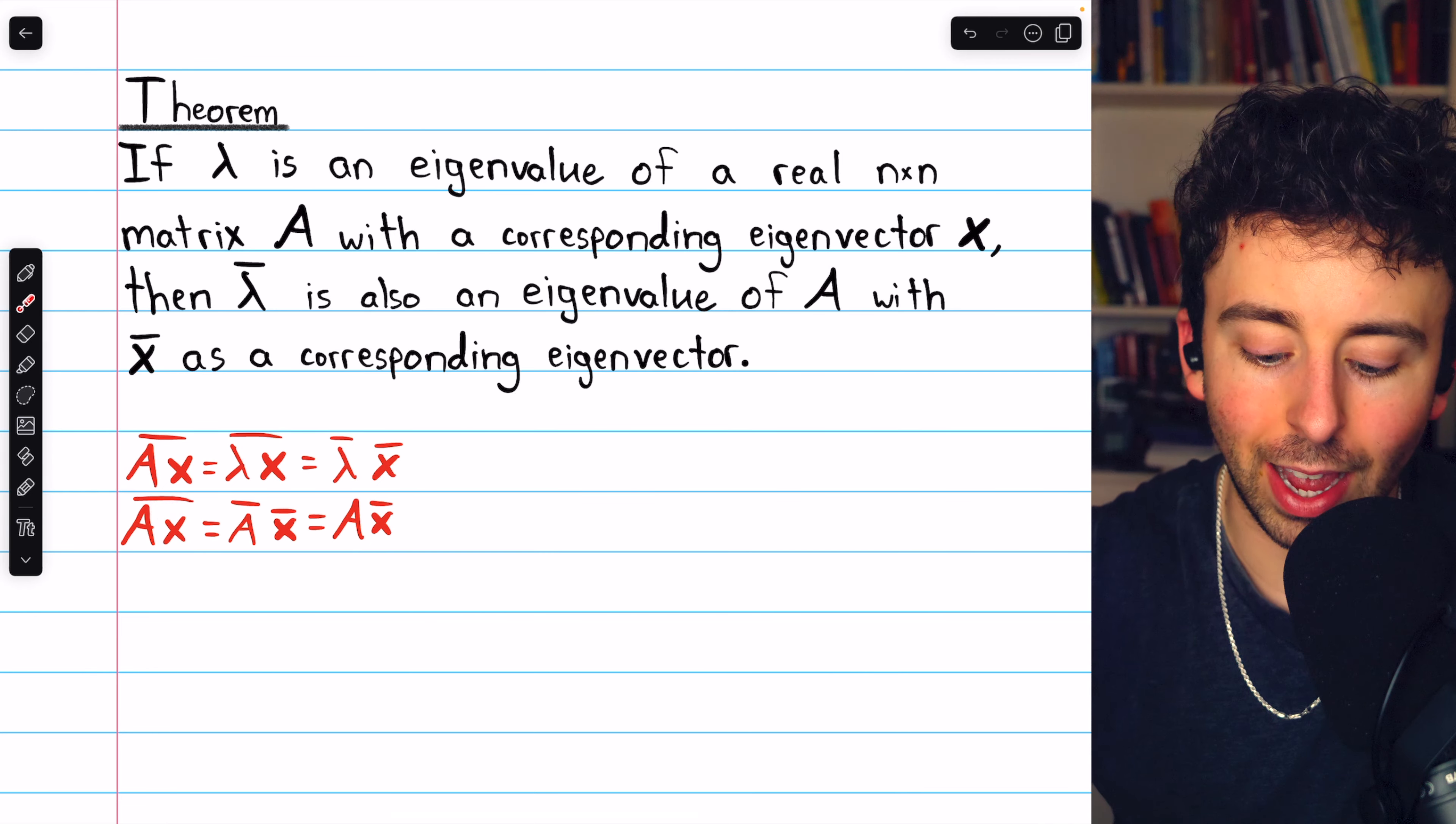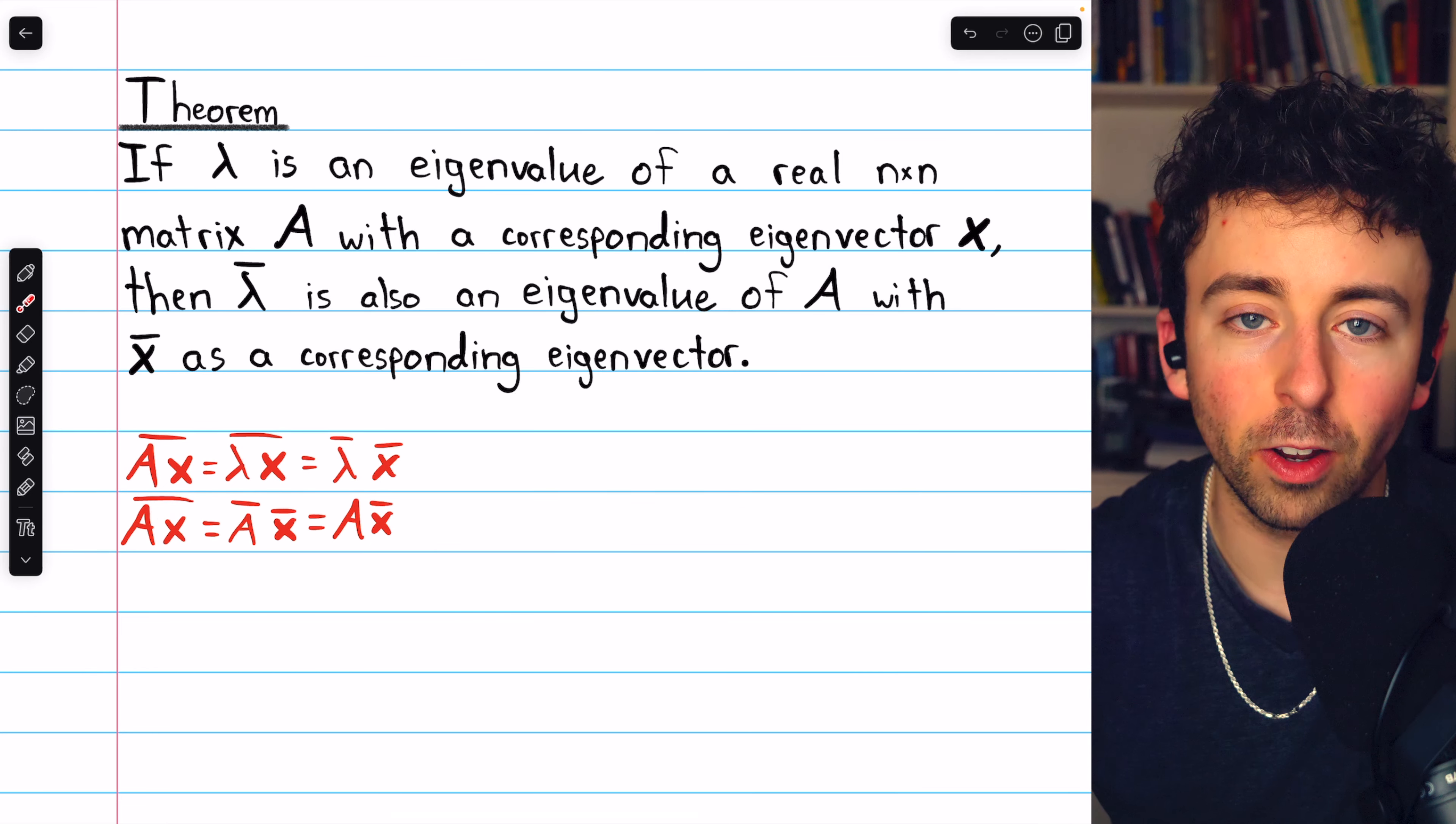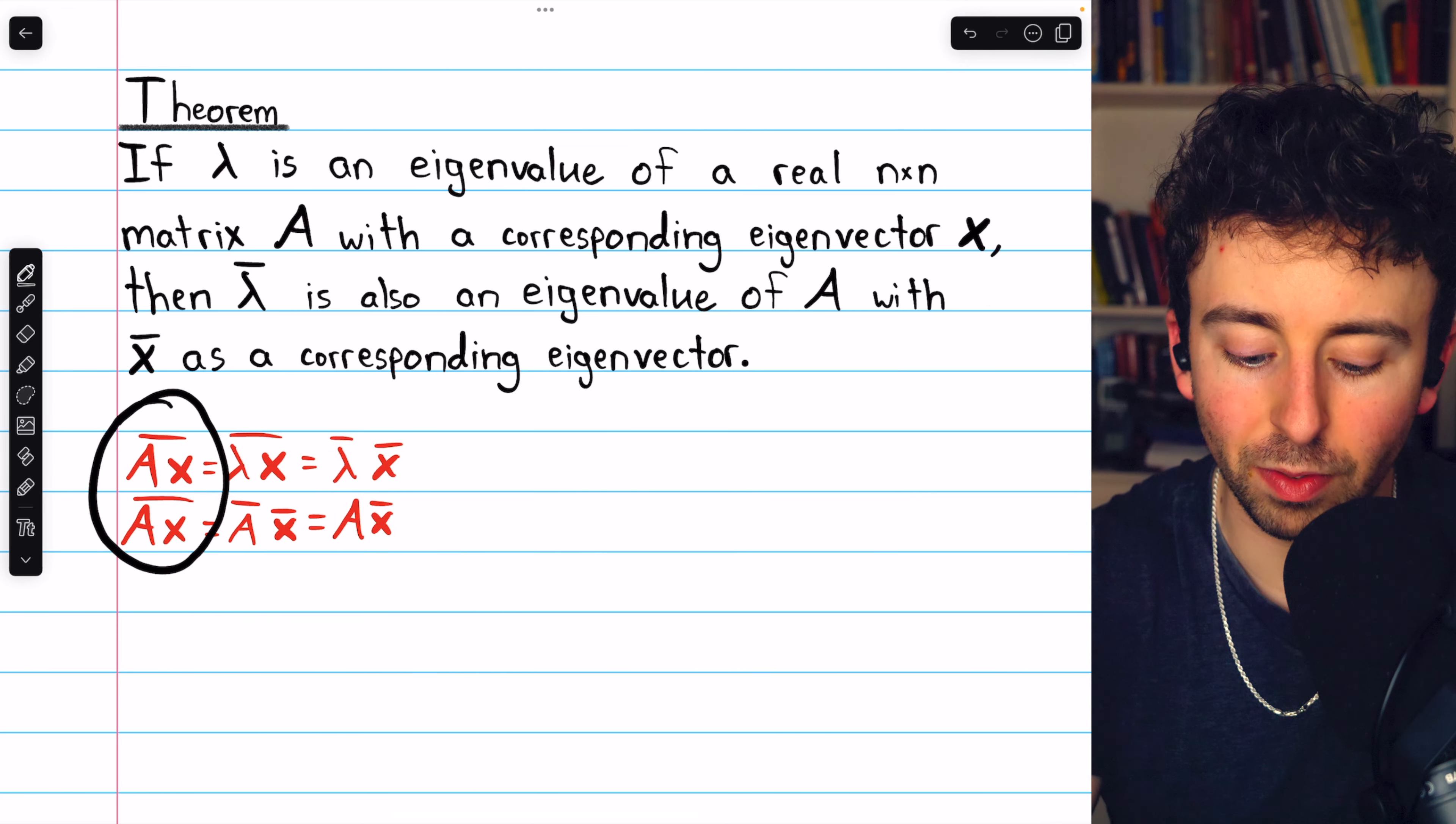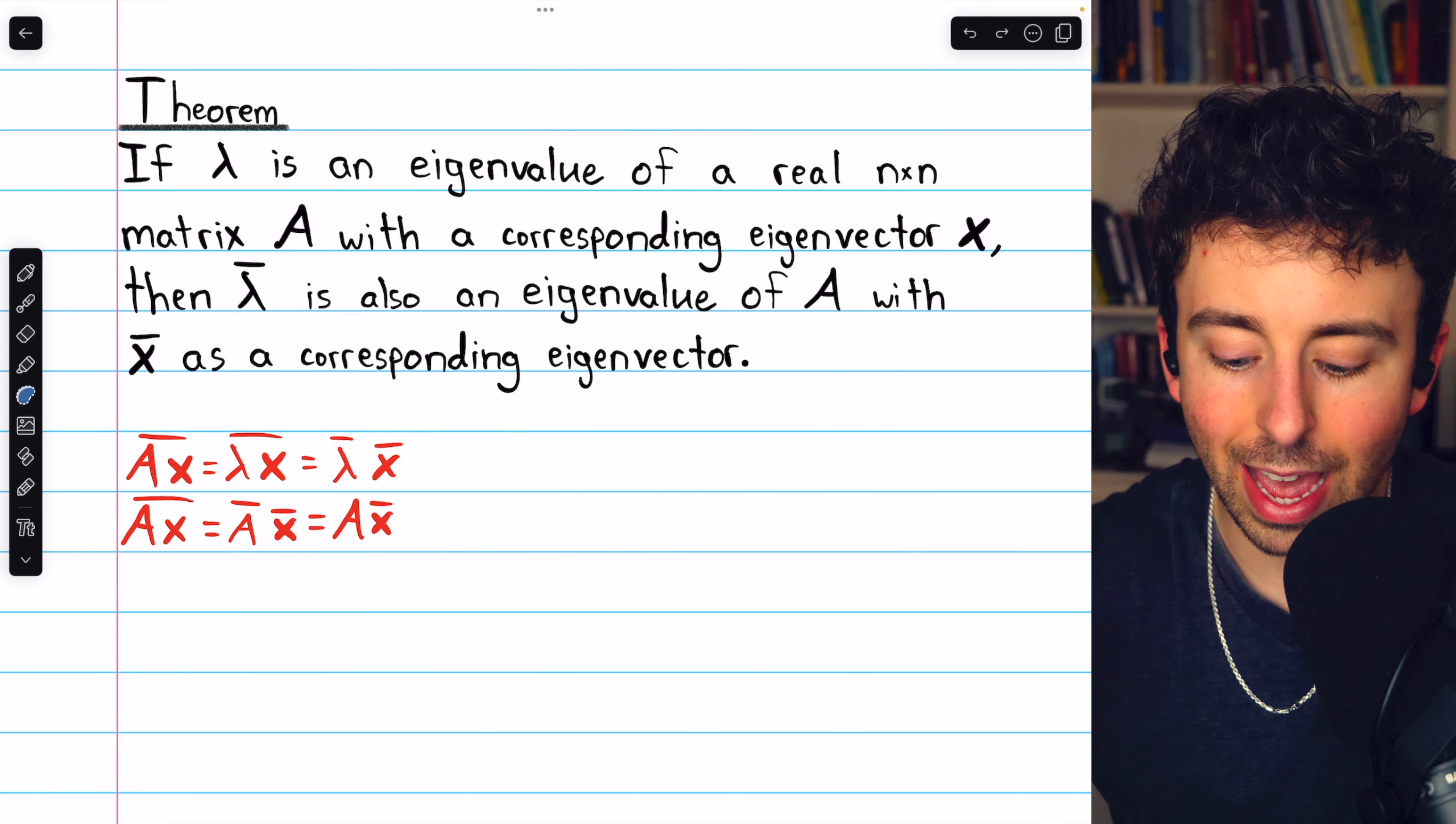So, the conjugate of A times X is A times the conjugate of X. Bring these two things together, because the left sides of these equations are the same, and we have our result.